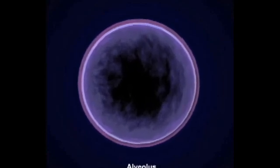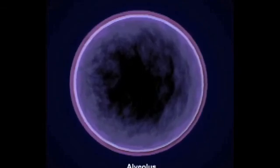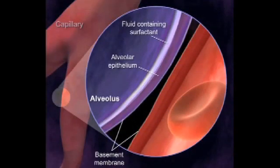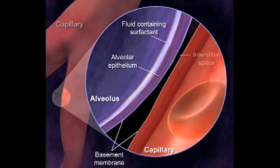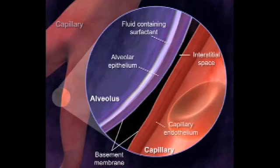Between the alveolus and the wall of the capillary is a very small space with interstitial fluid. On the other side of the interstitial space is the wall of a pulmonary capillary which is made up of a basement membrane and endothelial cells. The respiratory membrane consists of the layers through which the gases must travel to get into or out of the alveoli.